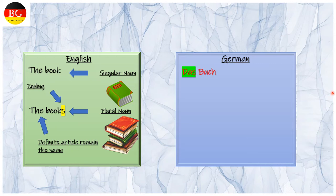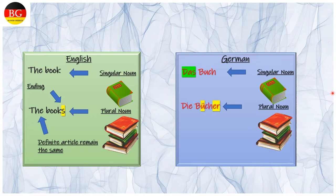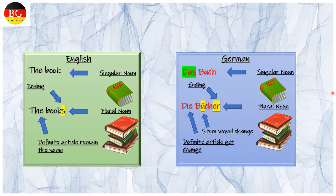Now let's move on to the German language. Zum Beispiel: das Buch, singular noun; die Bücher, plural noun. Ending is getting changed, stem vowel getting changed, and definite article is also changed.